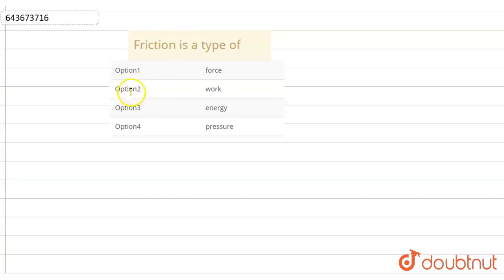Friction is a type of... The four options are force, work, energy, or pressure. So the correct answer is friction is a type of force.